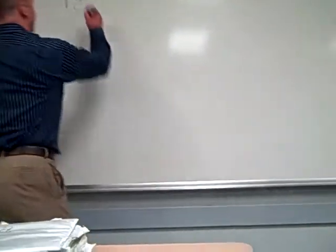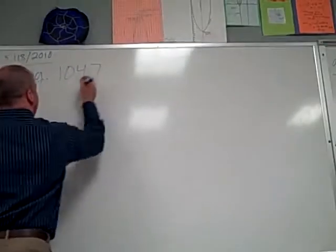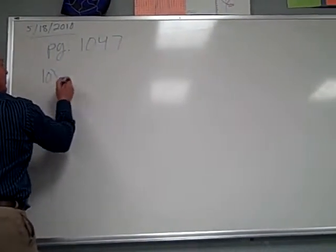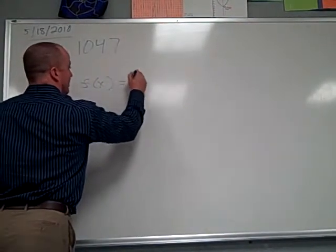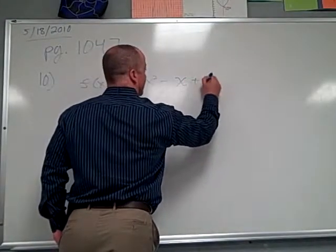Connor, please read me what page number? 1047. And that was number 10? Yes. Read me the problem. f of x equals 2x squared minus x plus 5 at (0, 5).